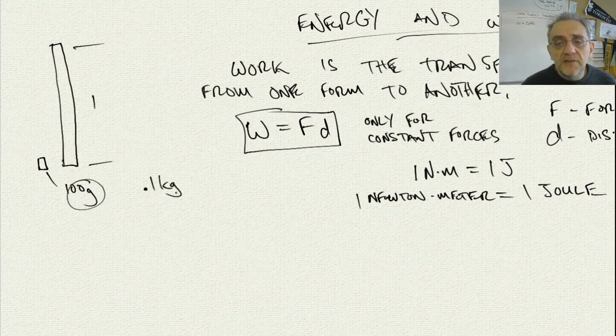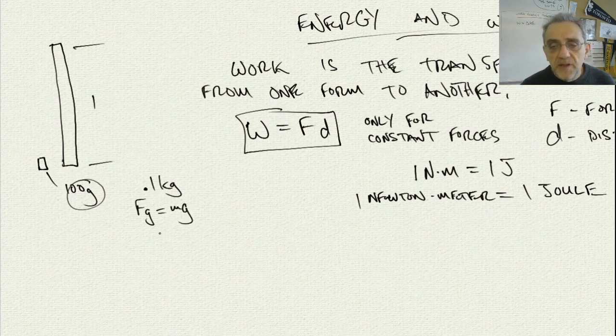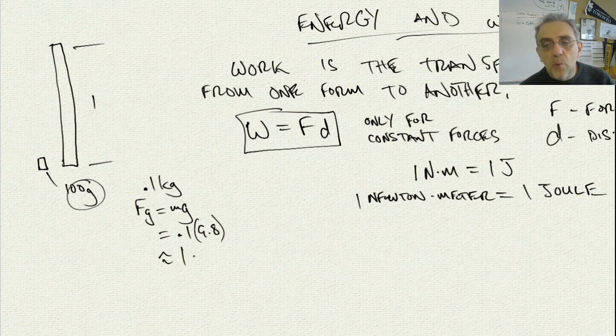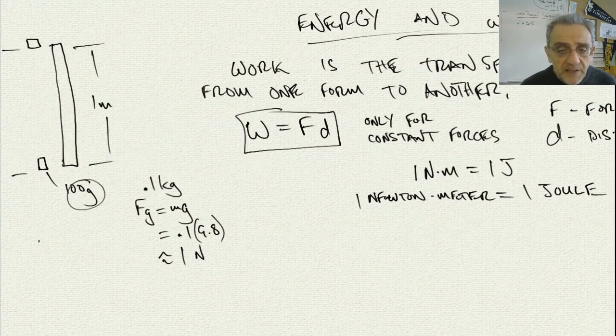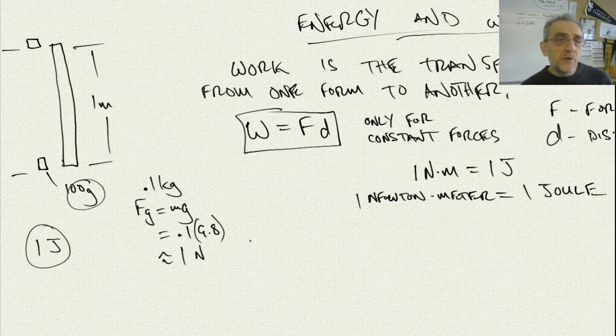So if it's 0.1 of a kilogram, therefore the force of gravity on that is going to be mg. So 0.1 times 9.8, that's going to give you approximately 1 newton. It's going to be about 0.98, but 0.98 is approximately 1. So it's not a heavy object, it's a very light object. But if we raise that object up to the top here from here to here by one meter, we will have done 1 joule of work.